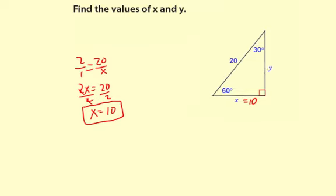As far as the y goes, the long leg is square root 3 times the short leg. So we know that y is 10 times square root 3, which is simply written like this, 10 square root 3.